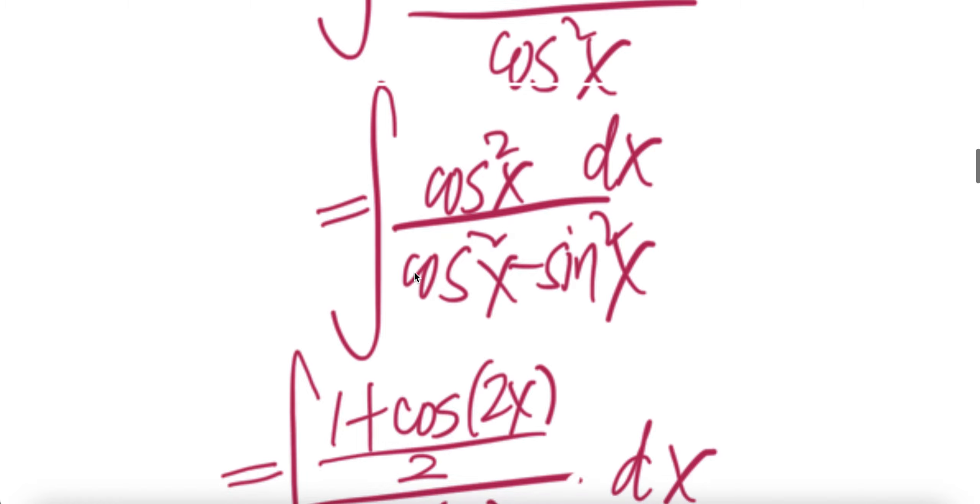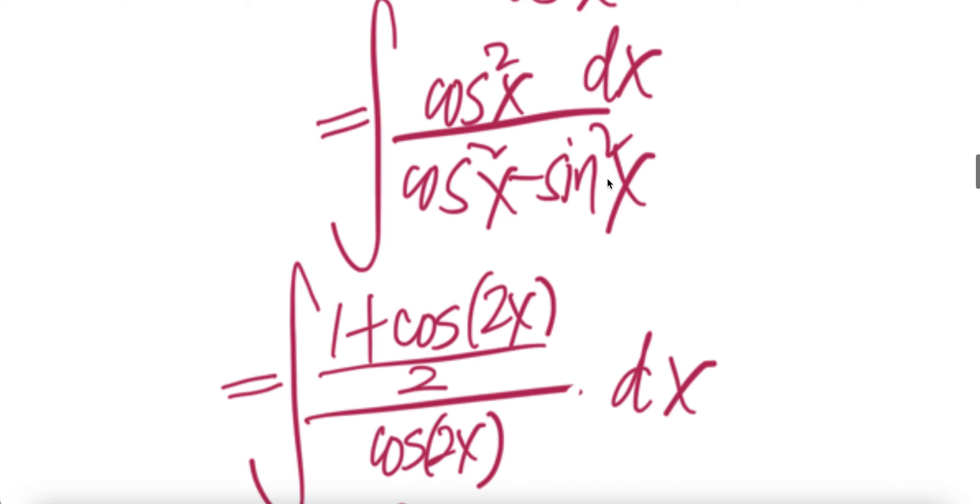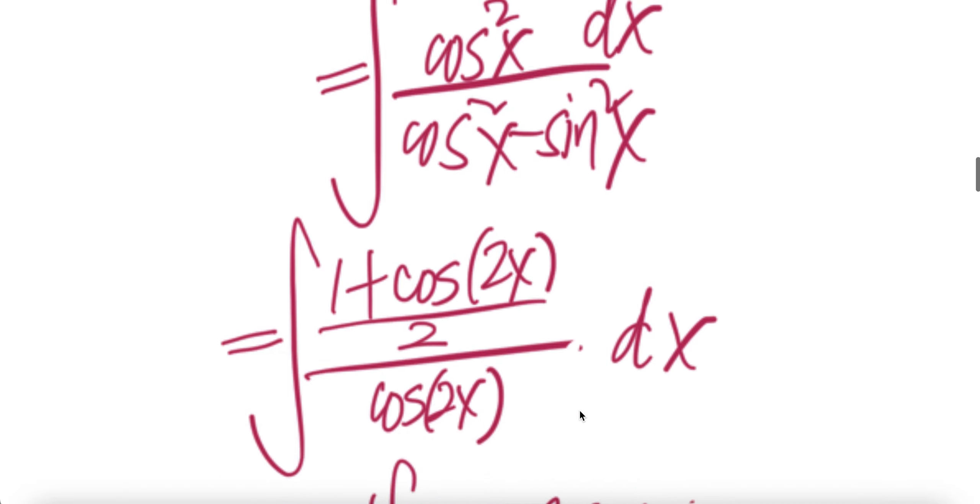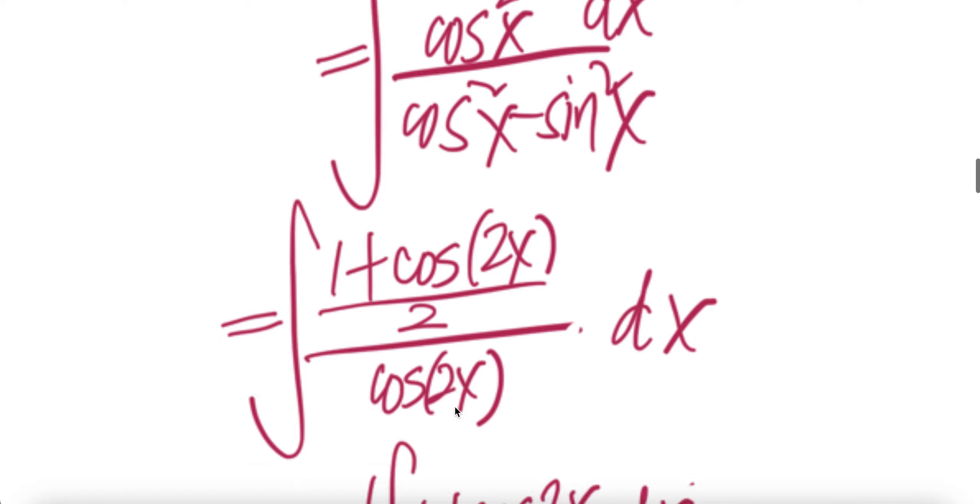Write the cos squared x in terms of double angle formula for cosine, which will be 1 plus cos 2x divided by 2. Downstairs is also another double angle formula for cosine, which is cos 2x.